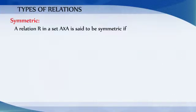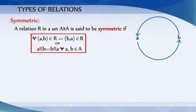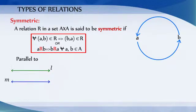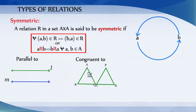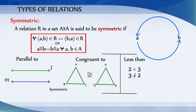Symmetric: A relation R in a set A cross A is said to be symmetric if for every (a, b) belonging to R, (b, a) also belongs to R. Or we can say a relates to b implies b relates to a. The relation parallel to is symmetric, since line L parallel to M implies line M is also parallel to L. Similarly, congruent to is symmetric because triangle ABC congruent to triangle PQR implies triangle PQR is congruent to triangle ABC. But the relation less than is not symmetric, because 2 less than 3 does not imply 3 less than 2.